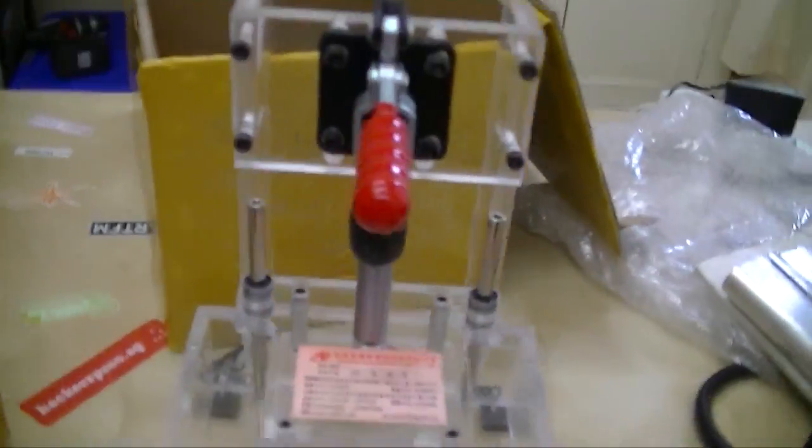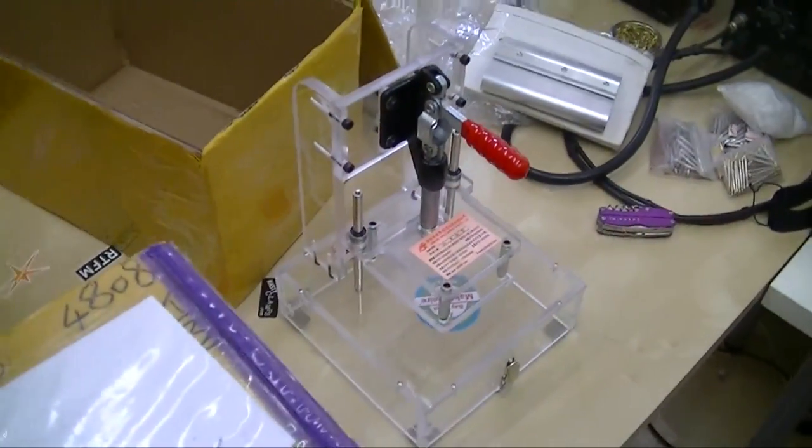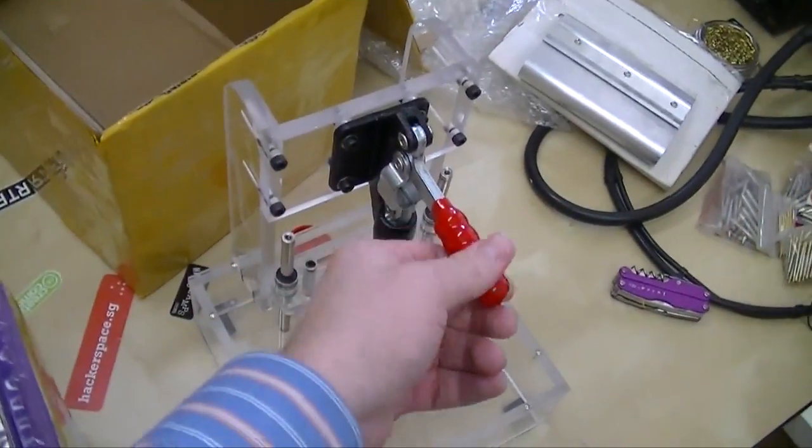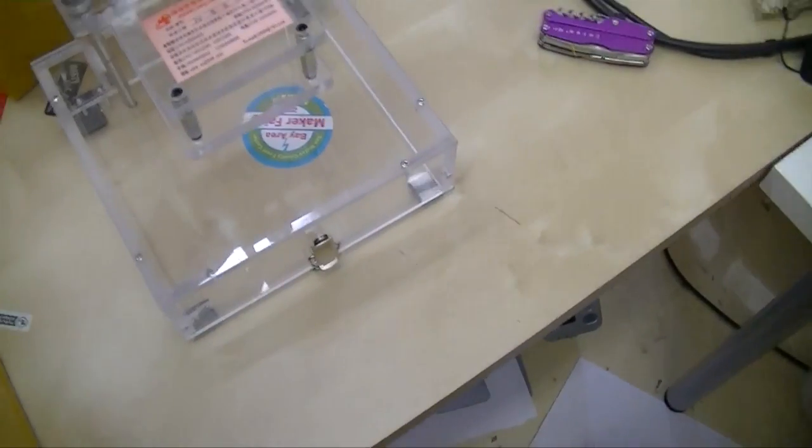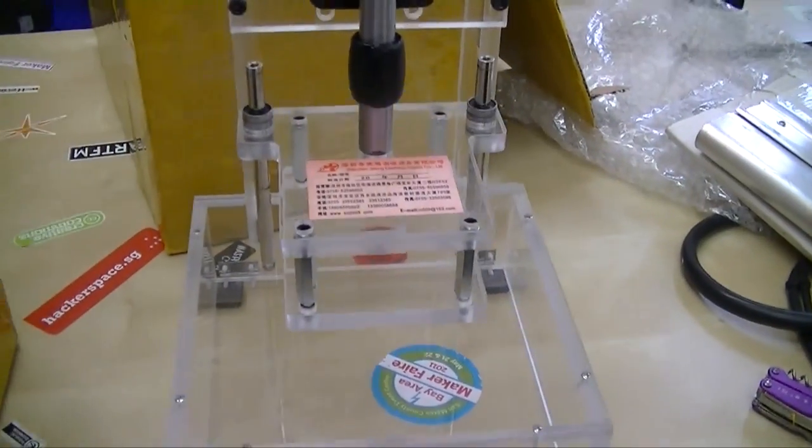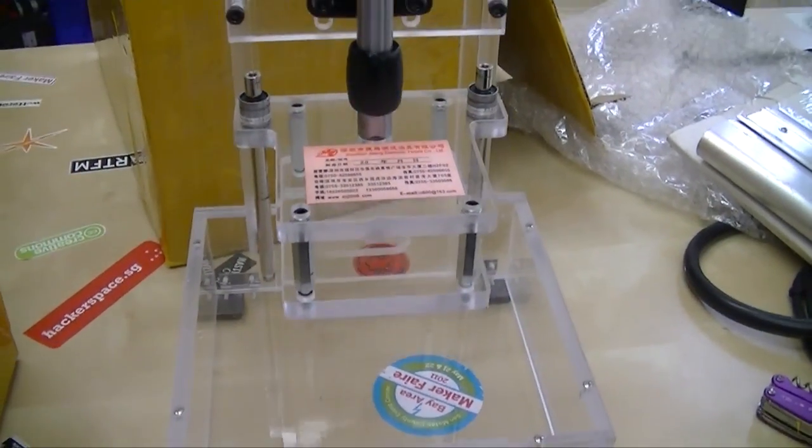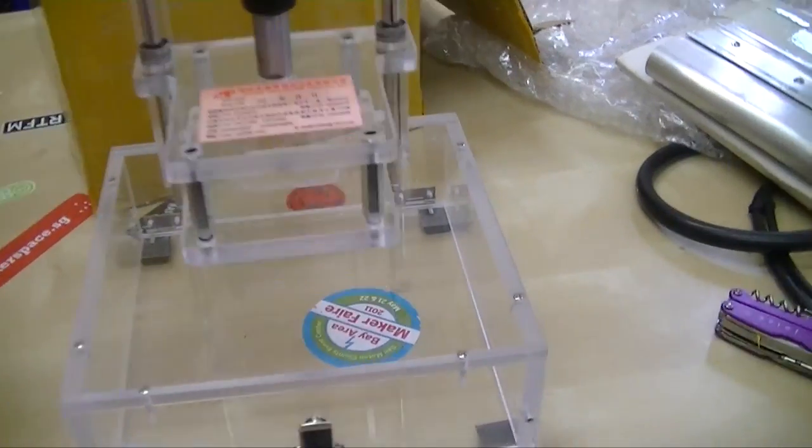So this is the test jig. There's a handle on top, you pull it down and it goes onto a board.